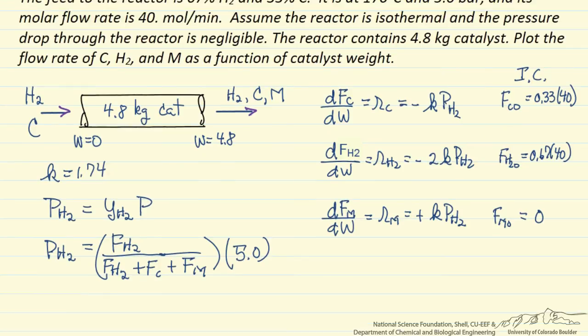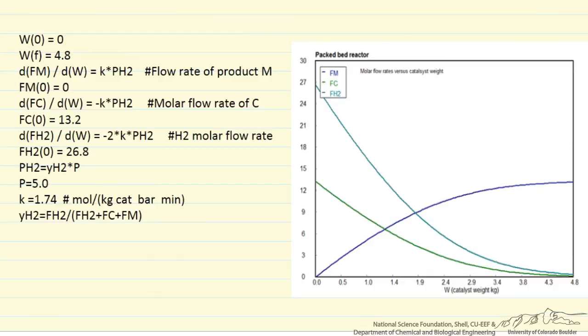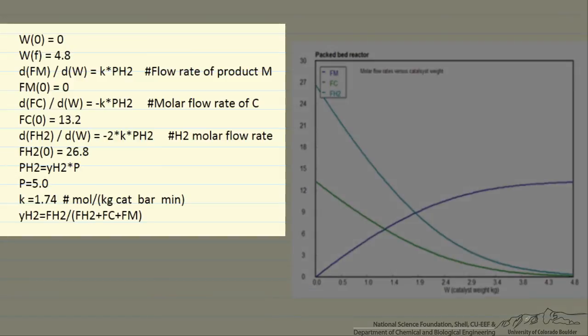So to solve these equations then we are going to substitute into Polymath. So I will show the Polymath program and the output. So what I am showing here is the Polymath program on the left side where I have the differential equations, their initial conditions, the initial and final values for the catalyst weight, and then the calculation of the hydrogen partial pressure and the mole fraction of hydrogen.